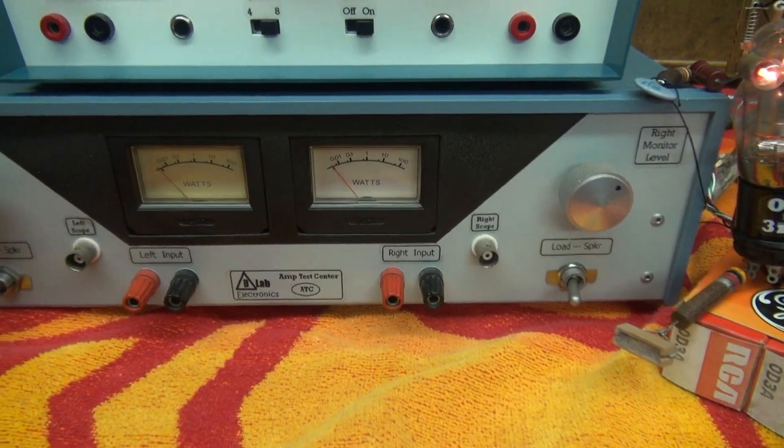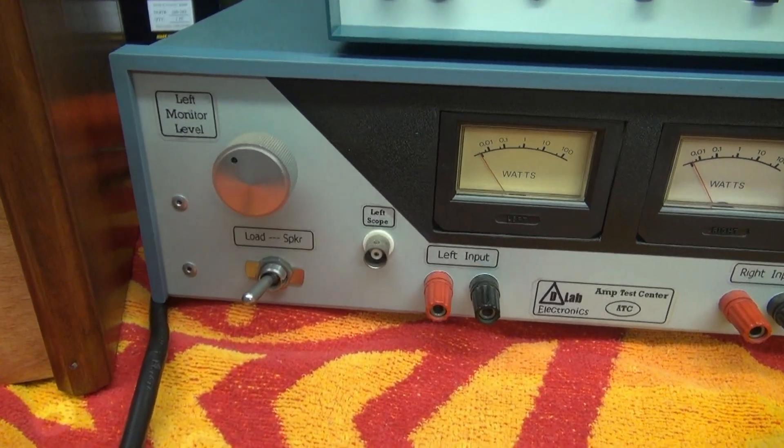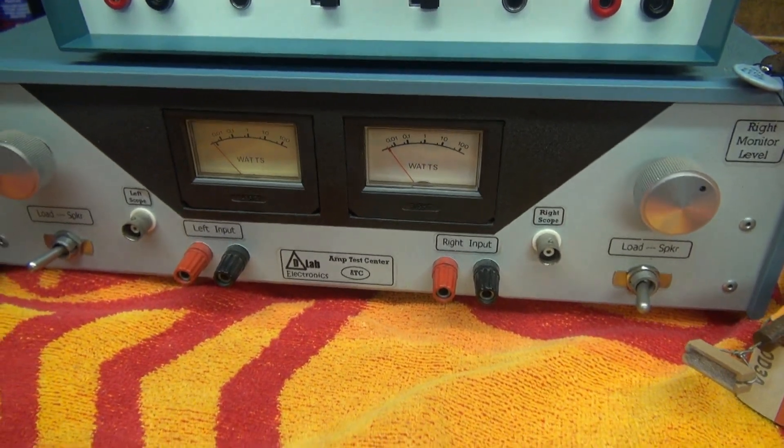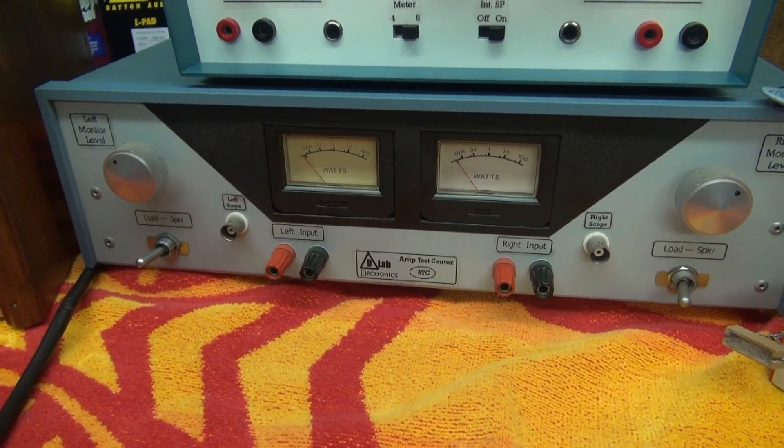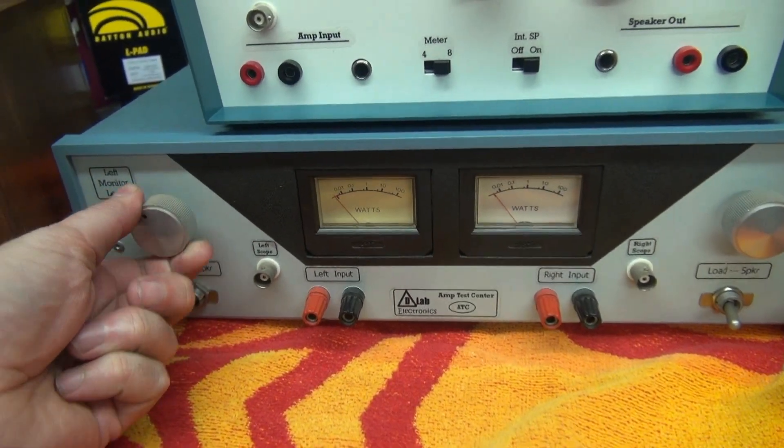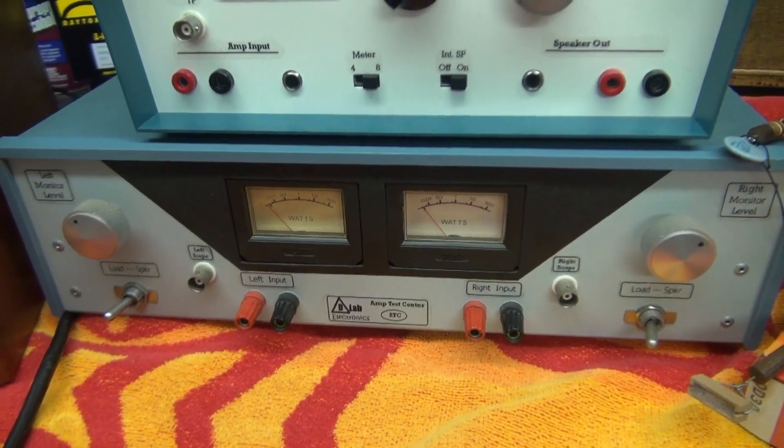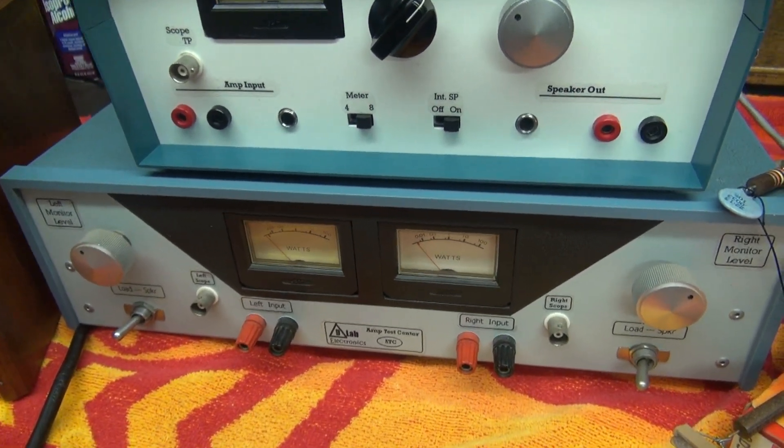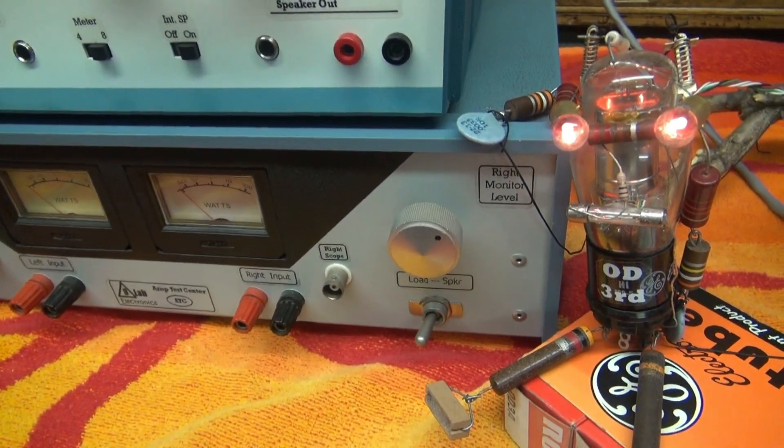Long ago, D-Lab produced the stereo amp test center. Here it is. This is the last one. I sold about a dozen of them. This is an audio dummy load with built-in wattmeters used to check stereo systems. So it was a two-channel unit with built-in L-pads so you could hook up external monitor speakers. After I built this, a lot of you guys said, hey, I thought you made monaural tube amps. So why don't you make a monaural audio test set? And O.D. agrees.